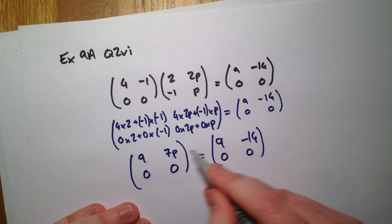So this is the only bit, the top right hand corner, so 7p equals negative 14, p equals negative 2. Thank you.